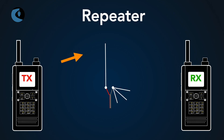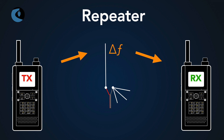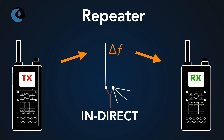Station one is going to transmit and send their signal up to the repeater. The repeater hears that and changes the frequency for the output — it does this automatically and instantaneously — and then sends that signal out. This is an indirect form of communication: your radio is not talking directly to the other radio; it's talking first up to the repeater station, which does a frequency shift and then sends it down to the other radios that are listening.